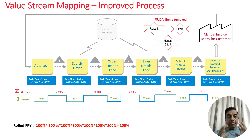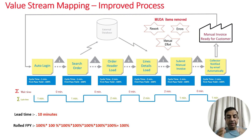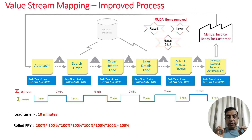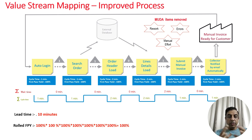In the improved state, the rolled first pass yield increased to 100% and the lead time was reduced to 10 minutes. All the MUDAs — rework, errors, and manual efforts — were removed from the system, and the overall process efficiency was enhanced.